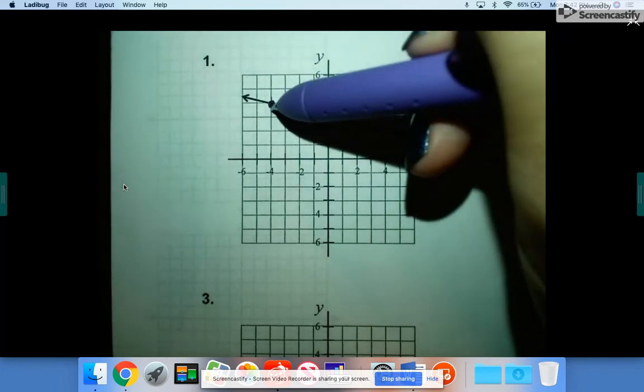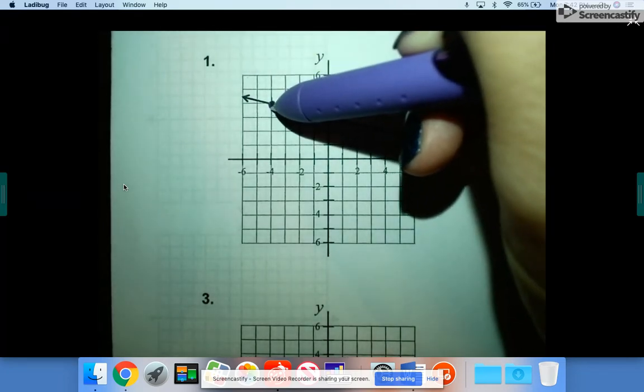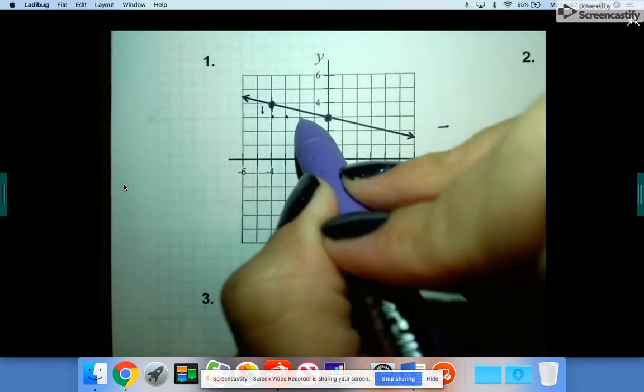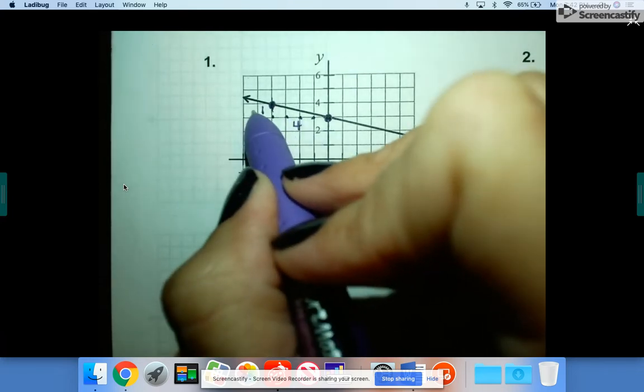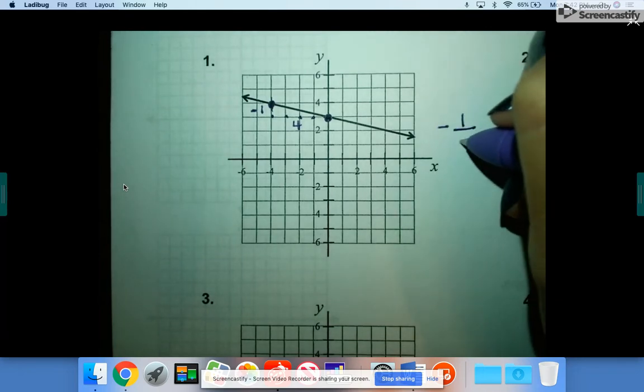And from there, we're going to count rise over run, or in this case, it falls and then goes over. So how many does it go down? Looks like one. How many does it go to the right? One, two, three, four. So it goes down one over four. So down one makes it negative one. So negative one over four.